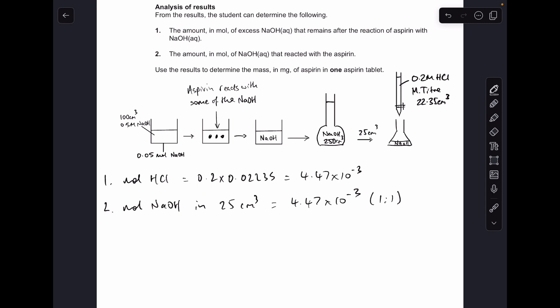Next thing we need to do is work out the moles of sodium hydroxide in the 250 cm³, which is also the moles of sodium hydroxide left over after the reaction with aspirin. So we just multiply by 10 because 250 is 10 times 25. So 4.47 × 10⁻².